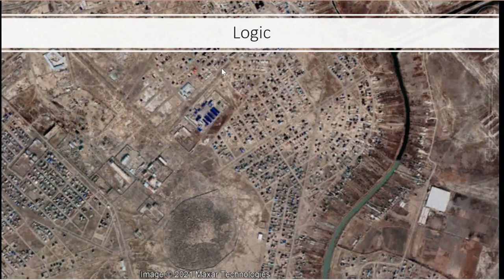Here we have the same picture just a bit closer up. These are houses. Here we have a potentially interesting area — we notice this is a square that has nice new roofs. But it could also be here; this could definitely be a military area.